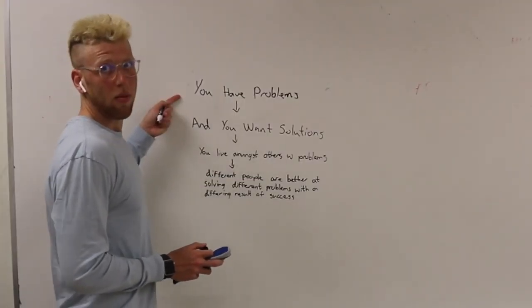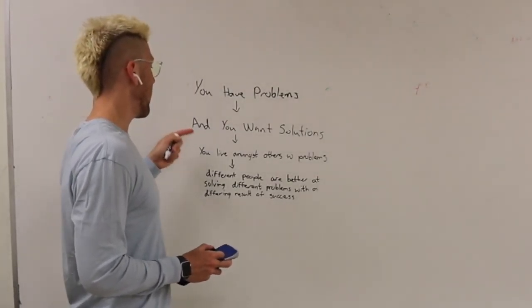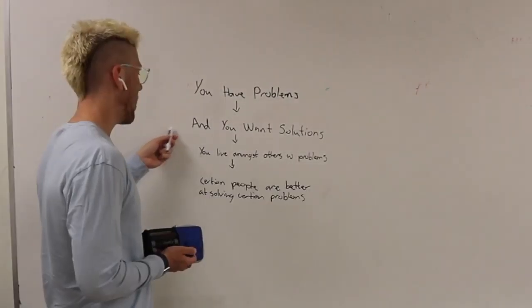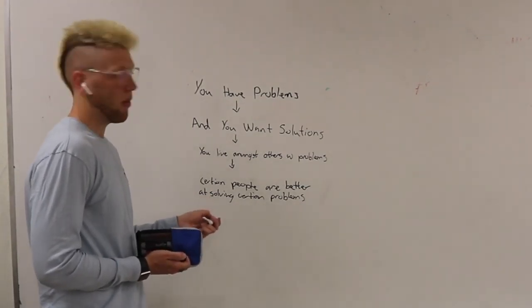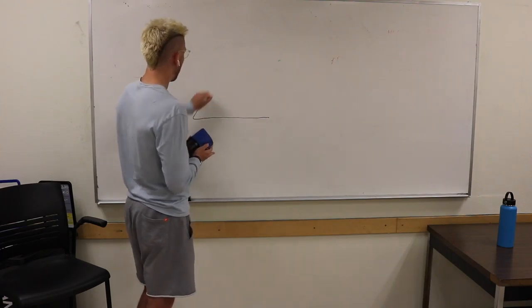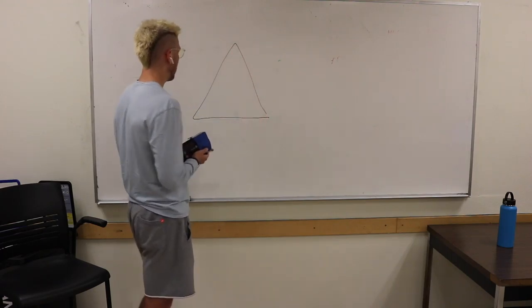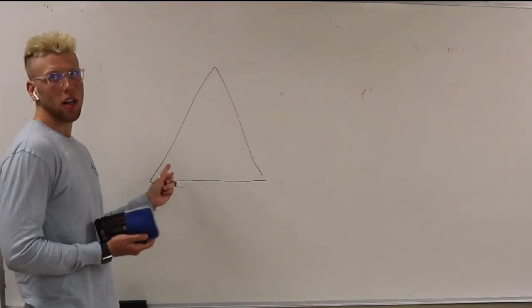Now, since you have problems, and since you want solutions, and you live in society amongst other people with problems, it's an inevitable fact that certain people are better at solving certain problems than others, and you can think of it arranged in a hierarchical structure that looks kind of like a big triangle.